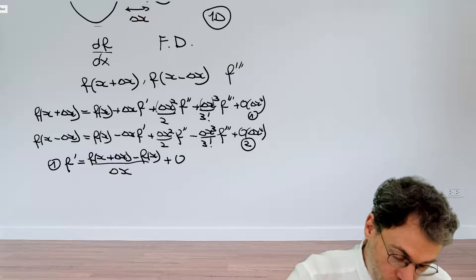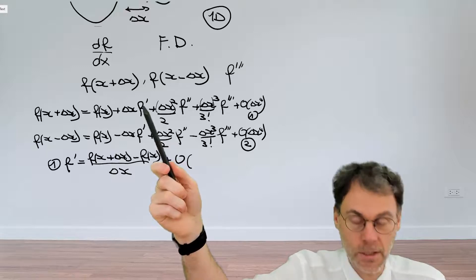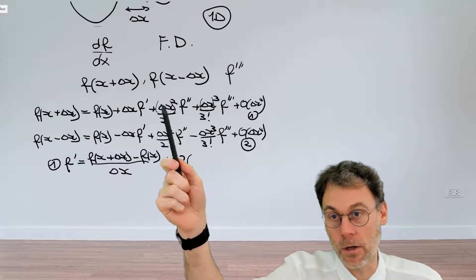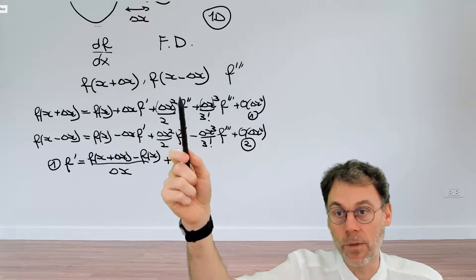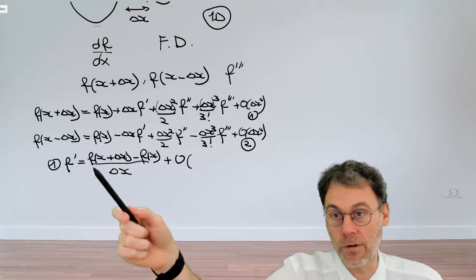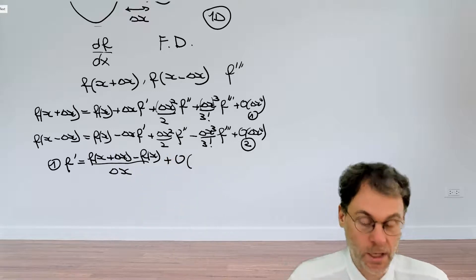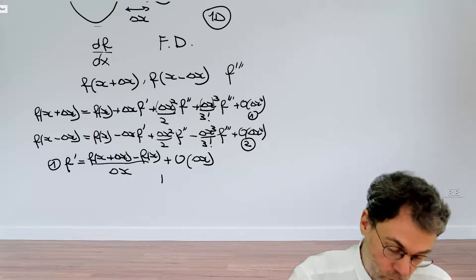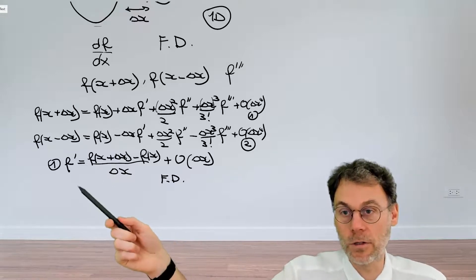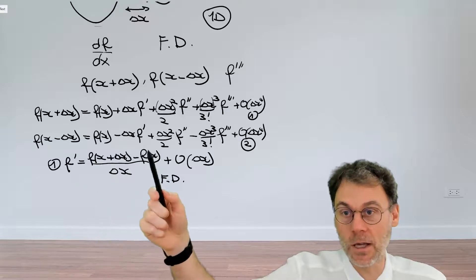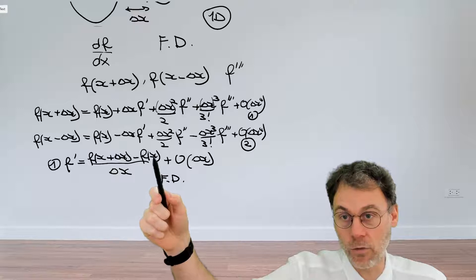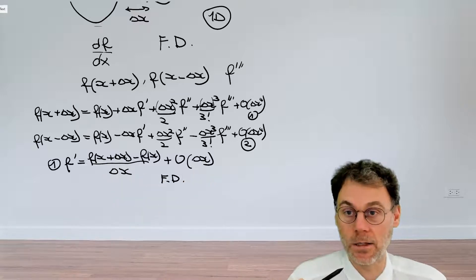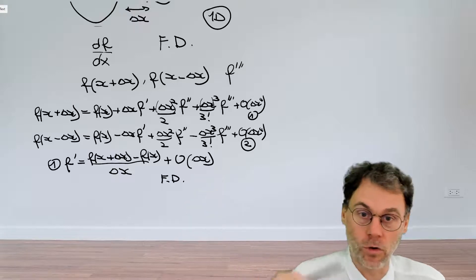How about the order of this approximation? You might be tempted to say it scales as Δx squared since we dropped the second order term, but remember we divided everything by Δx. So the error is not Δx squared but Δx. This is the so-called forward difference approximation — called 'forward' because we calculate f'(x) at x and incorporate information looking forward, namely from x + Δx. It is first-order accurate.